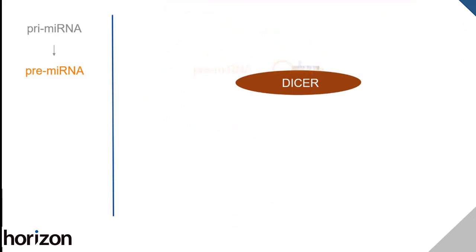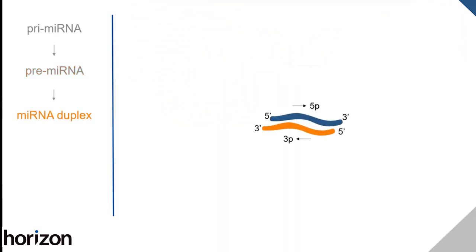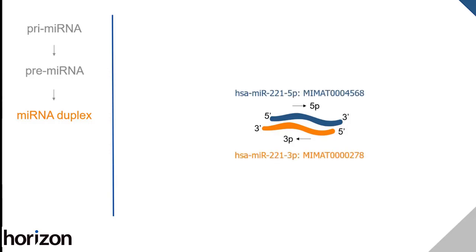The duplex has two strands, 5p and 3p, which originate from the 5' and 3' arms of the pre-microRNA. The 5p and 3p strands are not completely complementary — they can have mismatches, so you will find that they have different sequences reported in MIRBase.